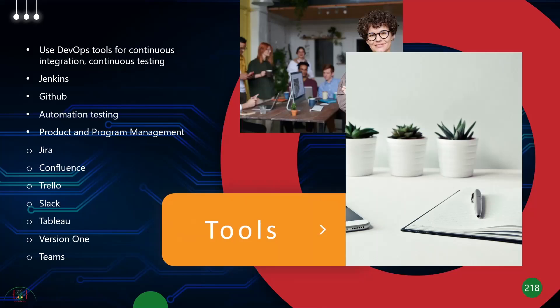We talked about DevOps — so many companies are adopting it now, with continuous integration and testing of code. There are so many tools available: for DevOps you have Jenkins and GitHub for automated testing; for Scrum you have Jira, Confluence, Trello, Slack, Tableau, Version One, and Microsoft Teams. There are tons of tools out there to help you with DevOps, Agile, and Scrum.